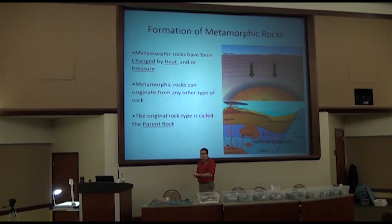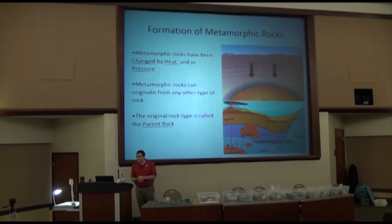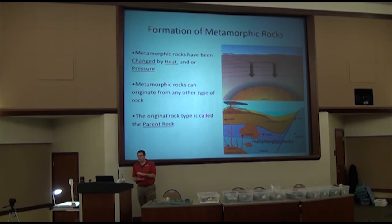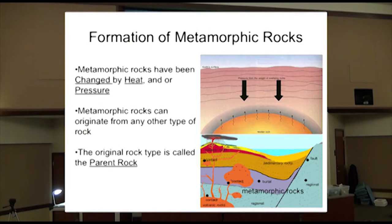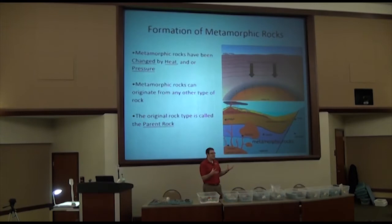What caused those changes? The cause of those changes is heat and pressure — or singularly heat or pressure — but often times both. A metamorphic rock can be formed from essentially any rock. Any rock that undergoes additional heating and additional pressure can become a metamorphic rock. That first rock, before the heat, before the pressure, before it was changed, we call the parent rock.